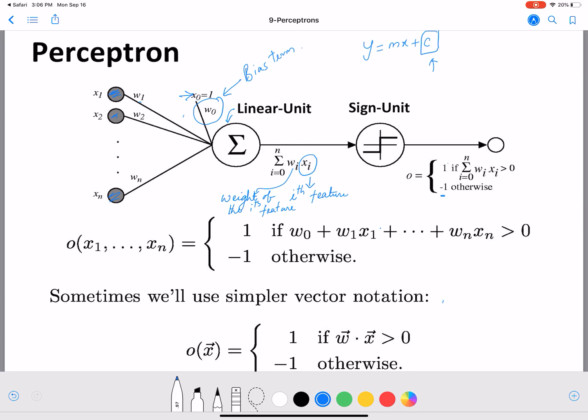Sometimes we use a vector notation. That's why we often refer to features as feature vector and w vector as the weight vector. Again, we have the same inequality here, greater than 0. If it's greater than 0, it's 1, otherwise it's minus 1. That's what your prediction o of x vector will give you.